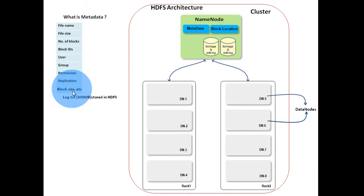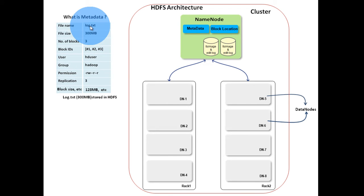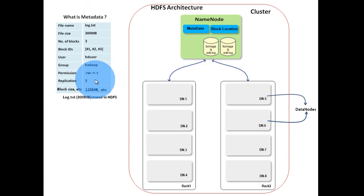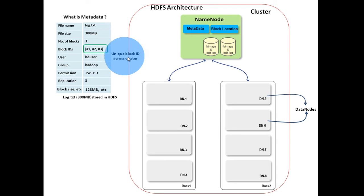For example, consider a log.txt file of size 300MB stored in our cluster. The metadata is: log.txt is the file name, its size is 300MB, it is broken into 3 blocks, block IDs are 1, 2, and 3. HD user created the file and belongs to the Hadoop group. Only HD user has write permission. Replication factor is 3, block size is 128MB, etc. Note that these simple block IDs are only used to understand the concept; otherwise block ID is unique across the cluster.